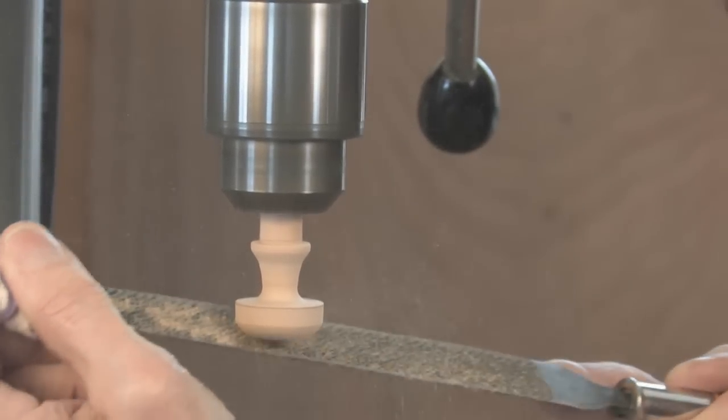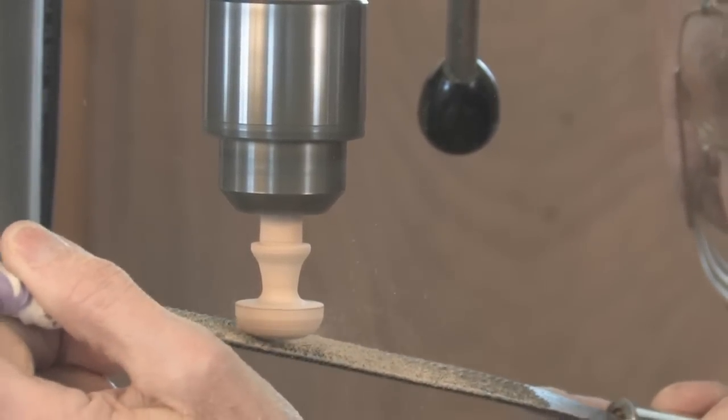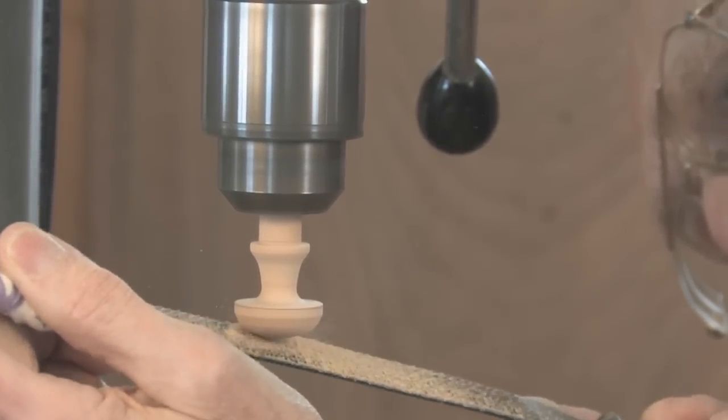And then lastly, I will take a flat rasp, again relatively coarse, and shape the mushroom itself. It wants to be really nice and round, not too flat.